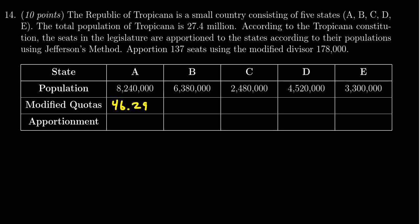For state C, 2.48 million divided by the modified divisor is going to give you 13.93. For state D, 4.52 million divided by 178,000 gives you 25.39.